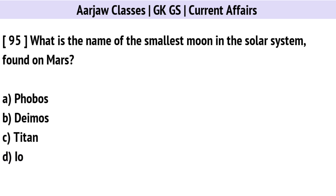What is the name of the smallest moon in the solar system, found on Mars? Correct option is B: Deimos.